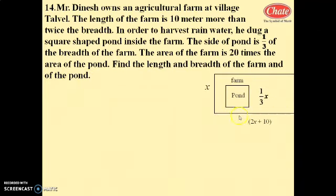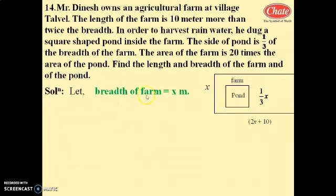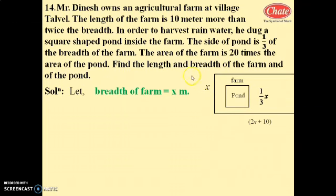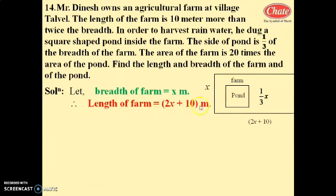Let the breadth of the farm be x. The length of the farm is 10 meters more than twice the breadth, so length equals 2x plus 10.